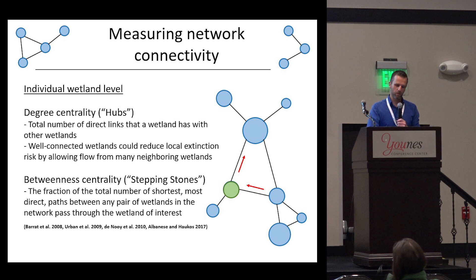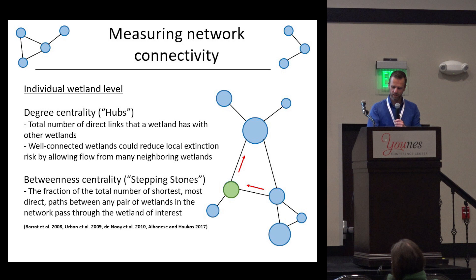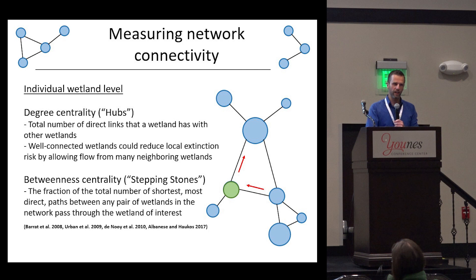We can also look at betweenness centrality — what I call stepping stones. That is the fraction of the total number of shortest, most direct paths between any pair of wetlands in the system that pass through a particular wetland of interest. If we strategically move one of these links, all movement from the south to the north of the network has to pass through one wetland in green, giving it a very high betweenness centrality value. If it weren't there, all the connectivity would collapse.